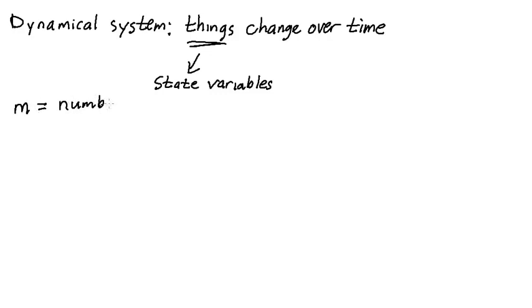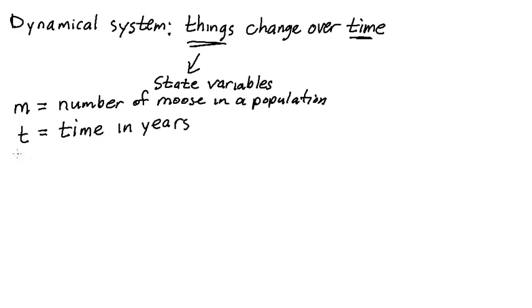of moose in a population. Now these moose are breeding and dying, so the number changes from year to year. So let's represent time by a new variable, let's call it t, and t will be time in years. Then